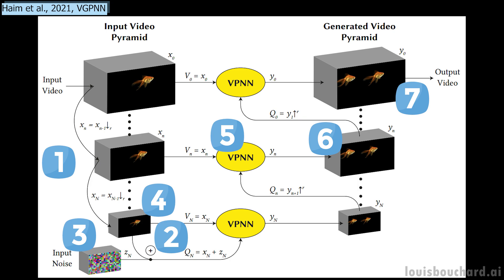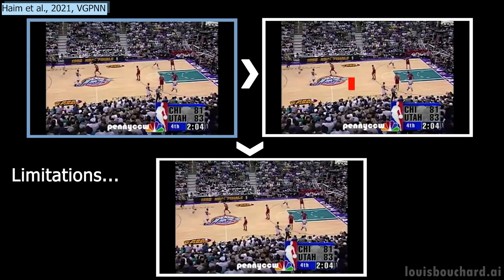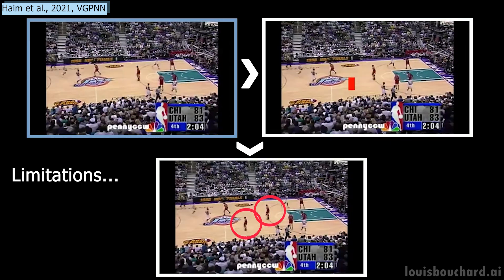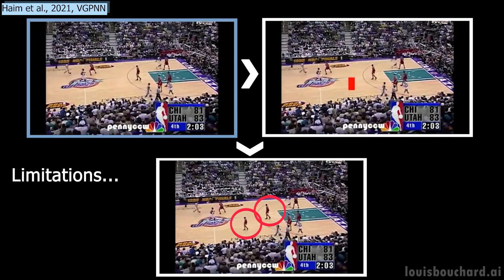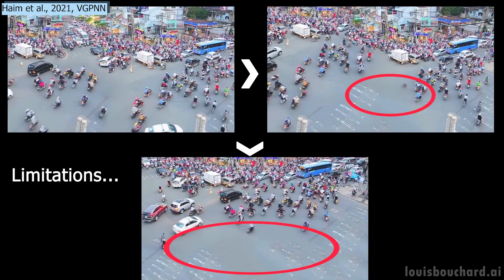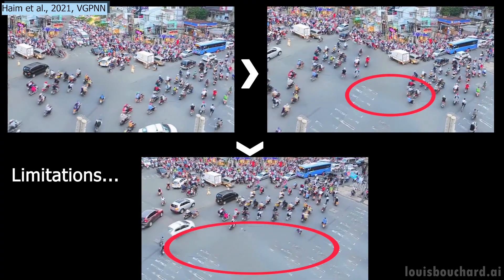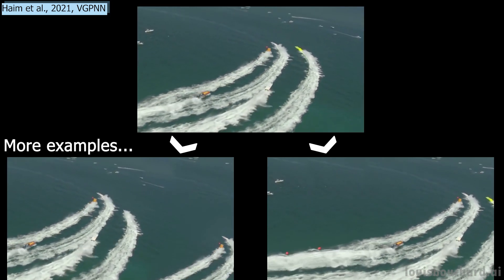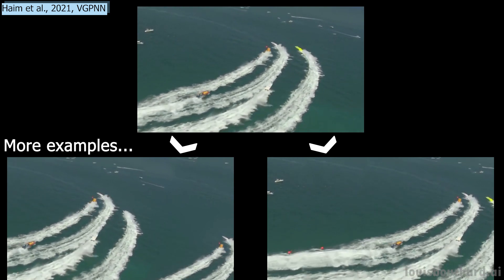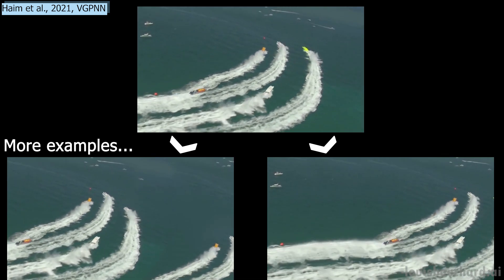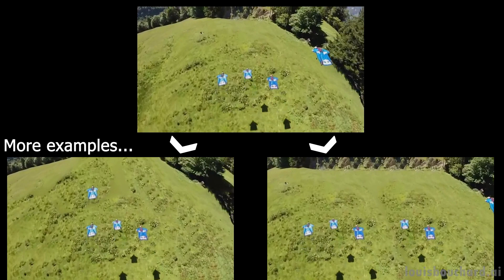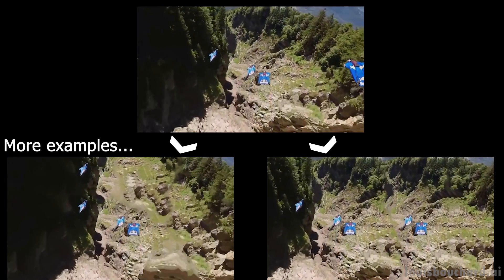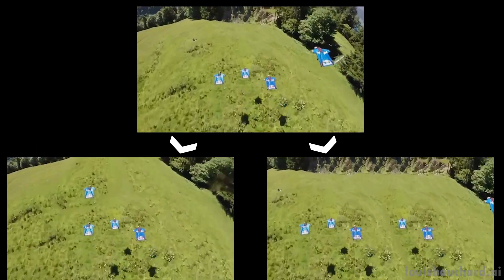Of course, the results are not perfect. You can still see some artifacts like people appearing and disappearing at weird places, or simply copy-pasting someone in some cases, making it very obvious if you focus on it. Still, it's only the first paper attacking video manipulations with the nearest neighbor algorithm and making it scalable to high-resolution videos. It's always awesome to see different approaches, and I'm super excited to see the next paper improving upon this one. Also, the results are still quite impressive, and they could be used as a data augmentation tool for models working on videos due to their very low runtime, allowing other models to train on larger and more diverse datasets without much cost.